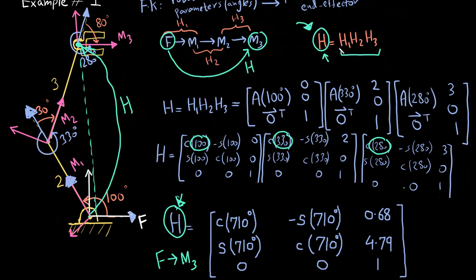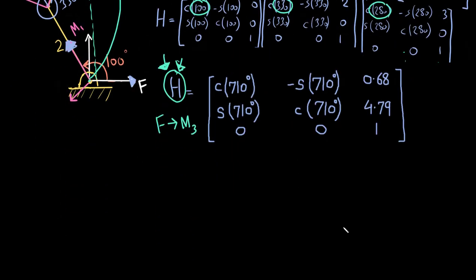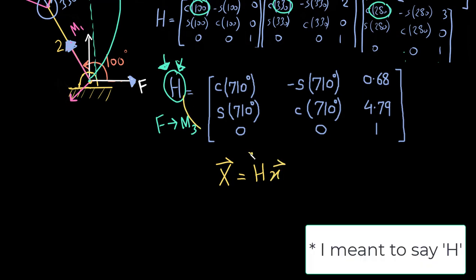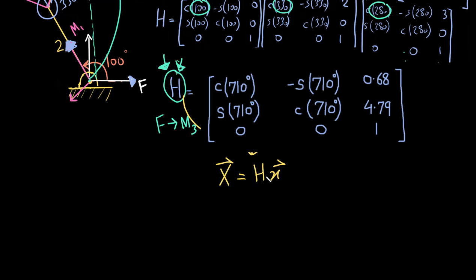The key takeaway is that if you multiply any number of homogeneous transforms together, you always get another homogeneous transform. It simply takes the initial frame and maps it directly to the end frame in one step. This H is what we wanted. Furthermore, if you have a point expressed in the end effector frame, multiplying it by this homogeneous transform gives you that same point expressed in the fixed frame.